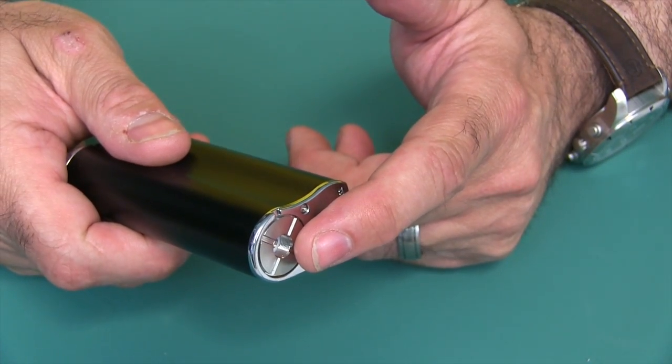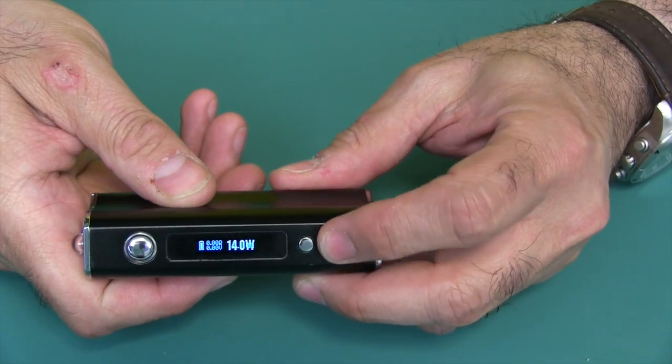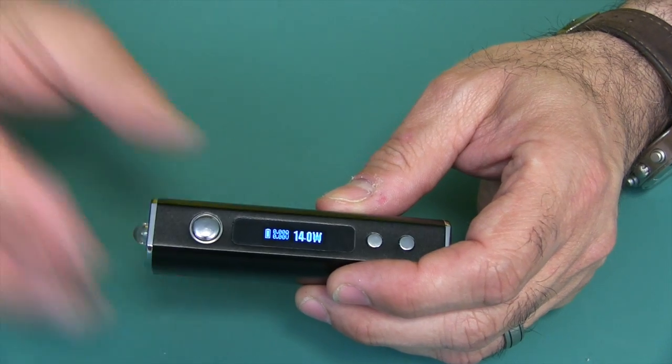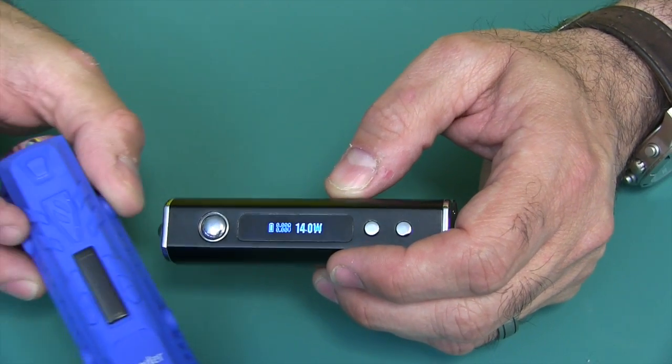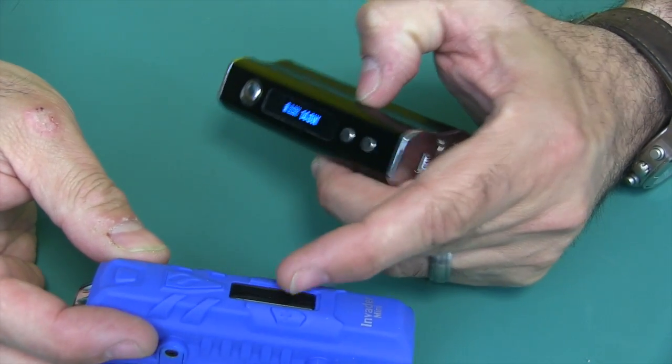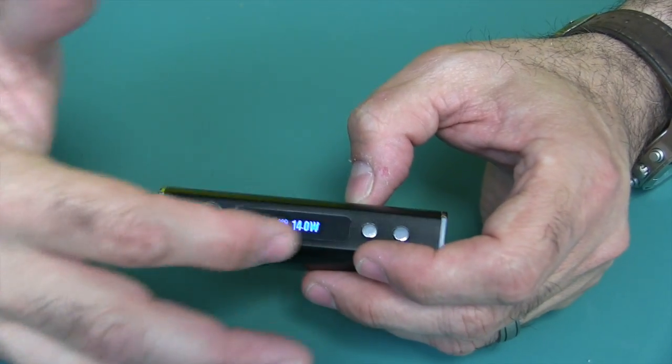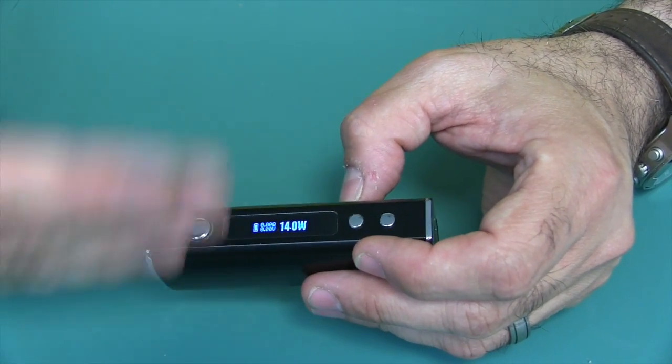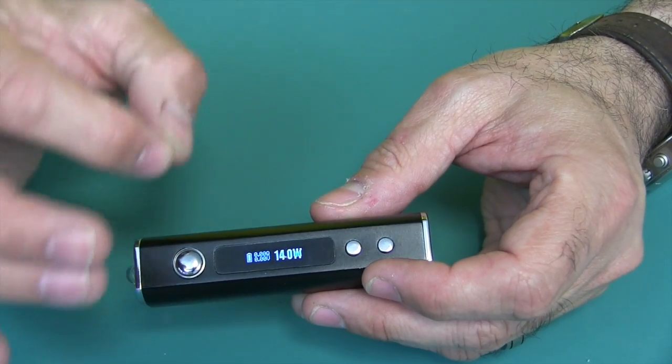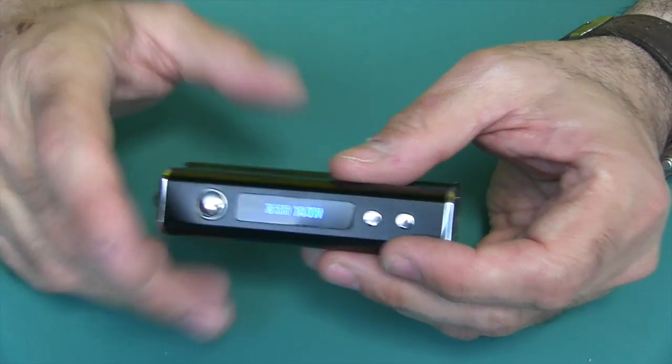50 watts. It is wattage controlled. You just go up and down. By the way, the way that this operates, especially with the temperature control and the way that it acts, is just like my Invader Mini right here. I really like the way that this device did temperature control. It didn't go and hit the limit and say that it was over and then start backing off. It sort of controlled it before it got to that point. It's really a solid acting device. I wouldn't be surprised if the same chip is in both, but I'm just speculating.